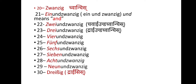Now let's have a proper look at numbers beyond 20. The number 21 in German is 'einundzwanzig' — that is 'ein' meaning one, 'und' meaning and, and 'zwanzig' meaning twenty. So the structure is: unit + und + ten. 'Und' means 'and' in English.